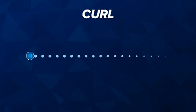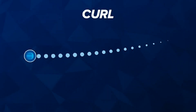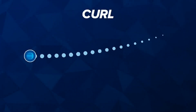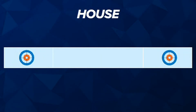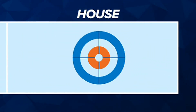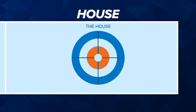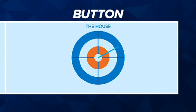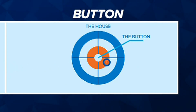Curl. The amount the stone curves while traveling down the sheet. House. The target on the far end of the sheet that competitors are aiming for. Button. The circle in the middle of the house — the stones closest to this are the ones that score points.